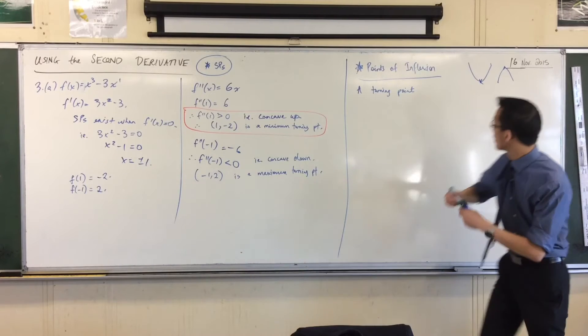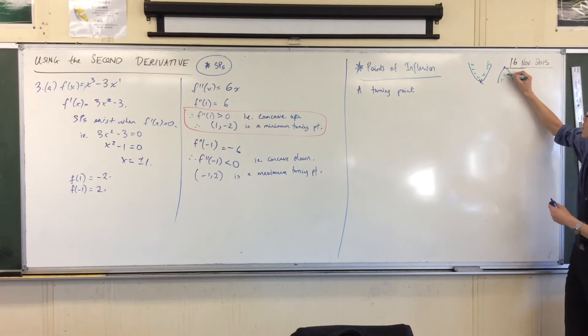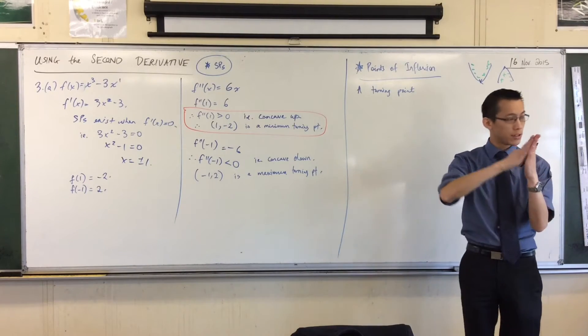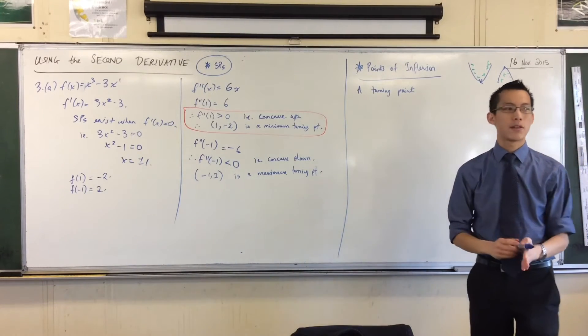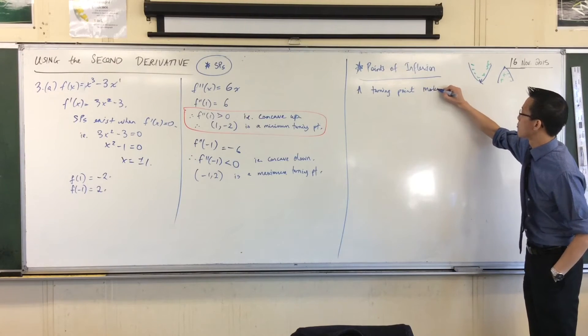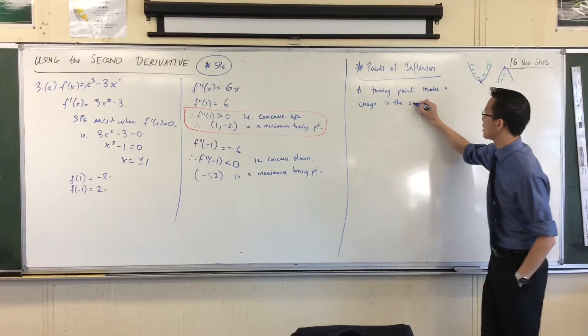From negative to positive, or positive to negative. A turning point is the point where, to the left and to the right, the sign of the gradient has changed. A turning point marks a change in the sign of the gradient.